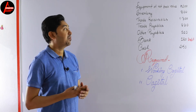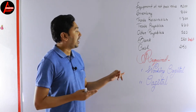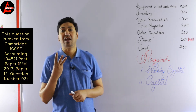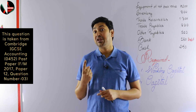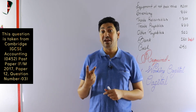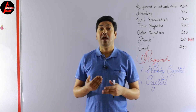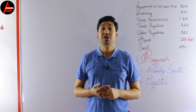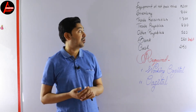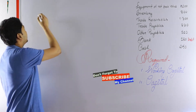To calculate working capital, we will follow three steps. In the first step, we will calculate total current assets. In the second step, we will calculate total current liabilities. And in the third step, we will calculate working capital. So let's look at the items.